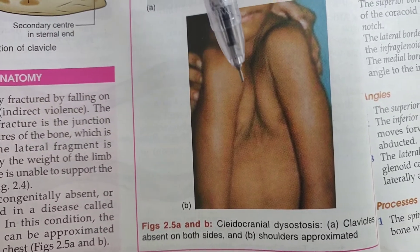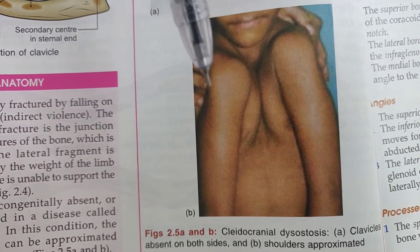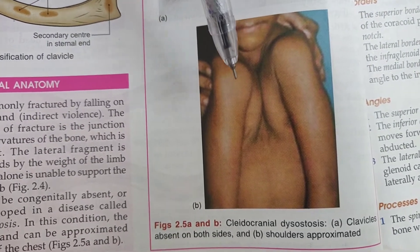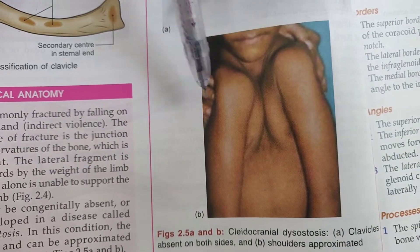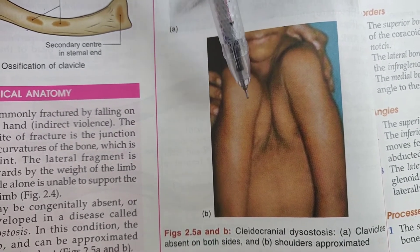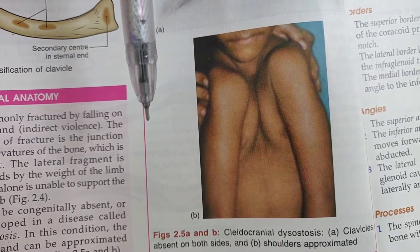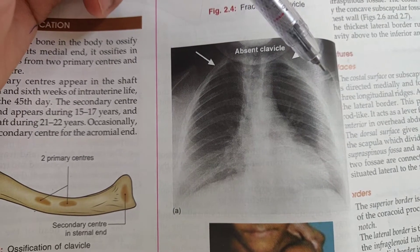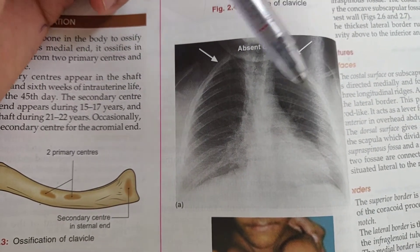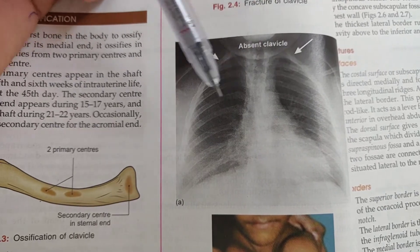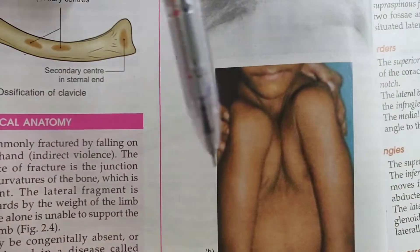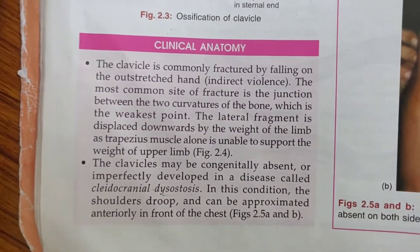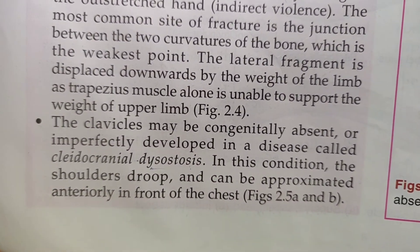The next condition is called cleidocranial dysostosis, in which there is a congenital absence of the clavicle, so the shoulders will droop and can be approximated anteriorly. We can see in the X-ray there is no clavicle and the scapulae can be approximated anteriorly. This picture here demonstrates cleidocranial dysostosis.